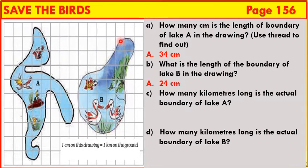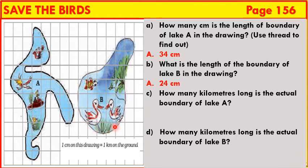Exercise B: What is the length of the boundary of Lake B in the drawing? Even Lake B doesn't have straight lines, so we cannot measure the boundary of Lake B with a scale. Here also, we will use a thread and put it on the boundaries of Lake B, then measure the length of this thread using a scale. By using thread, we get the length of the boundary of Lake B as 24 centimeters.